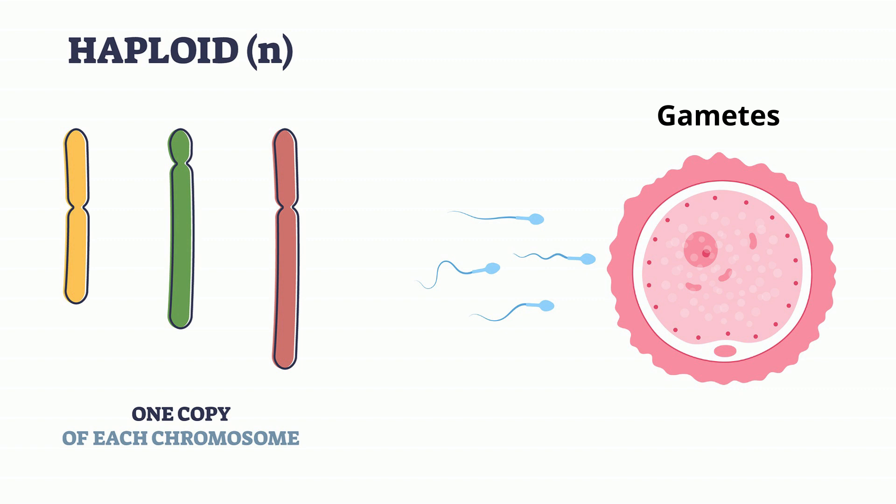Haploid means that you only have one set of chromosomes. So in humans, males make sperm cells with 23 chromosomes, and females make eggs with 23 chromosomes.